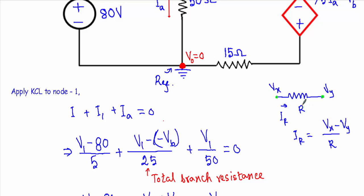Before applying KCL, let me give a reminder on how to calculate the current through a resistor. If a resistor R has voltage Vx at one end and Vy at the other end, current flows from high potential to low potential. The current IR equals the voltage difference (Vx minus Vy) divided by the resistance R.